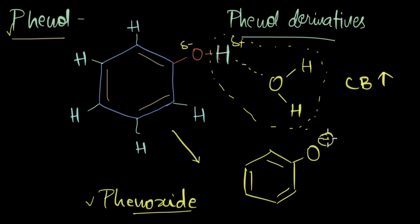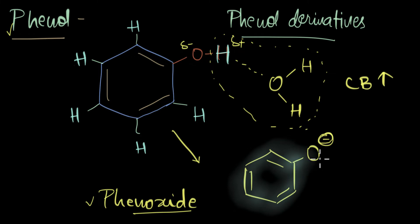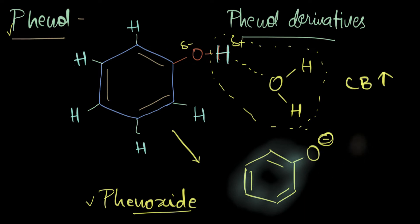The phenoxide molecule has a negative charge which can be delocalized over the entire molecule, and the more there is delocalization the more stable the molecule becomes. One thing we need to be careful with is that this molecule is not aromatic.